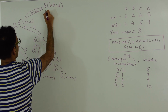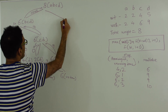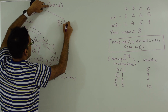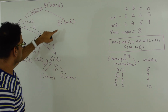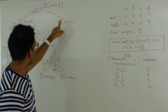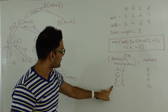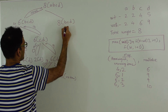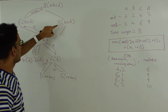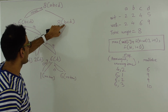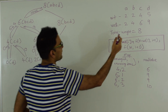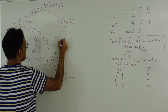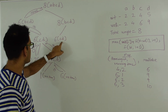Now let's see what happens if we don't pick A. We're left with the same weight 8 but 3 items B, C, and D. First we check if we've already calculated for this combination — weight 8 and 3 items — and we have not. So we go ahead and calculate. On the left side we pick B, leaving us with 8 minus 2 = 6 weight and items C and D.